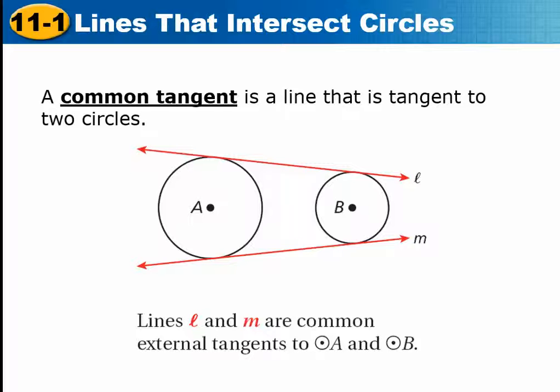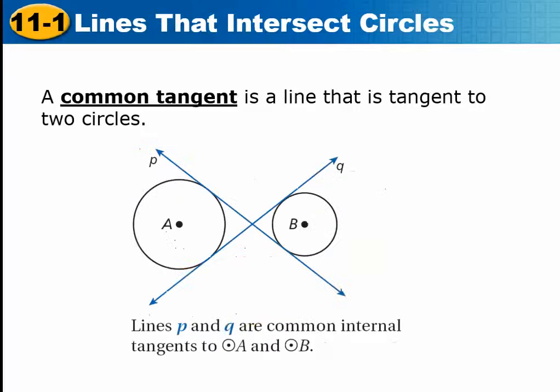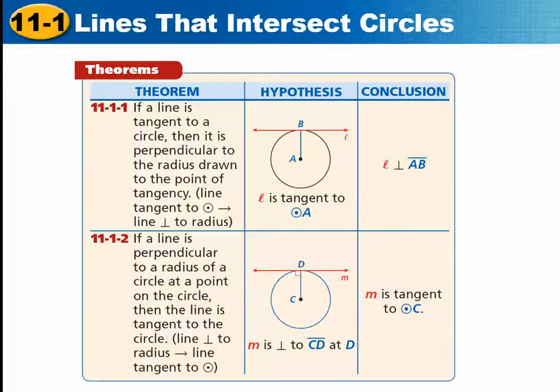Okay, common tangent is a line that is tangent to two circles. Lines L and M are common external tangents to circle A and circle B. You could also have common tangents this way. So if a line, there's these theorems, if a line is tangent to a circle, then it is perpendicular to the radius drawn to the point of tangency.